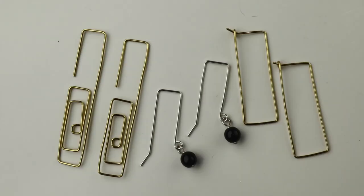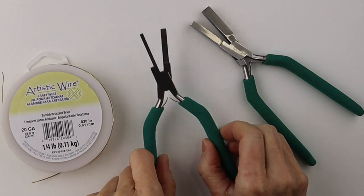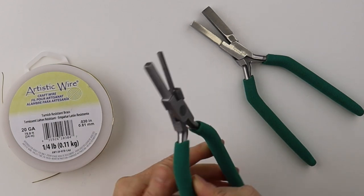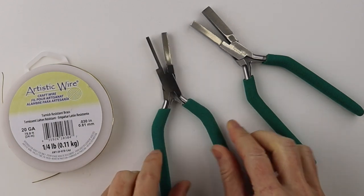Today I had a special request from Dee to make some rectangular ear wires using the square mandrel pliers. These are the Wubbers brand. I have two different sizes.